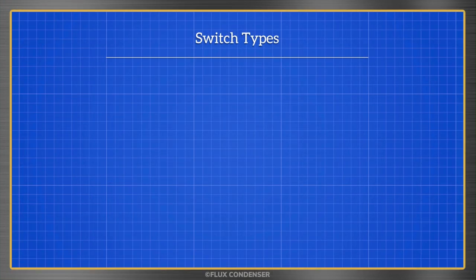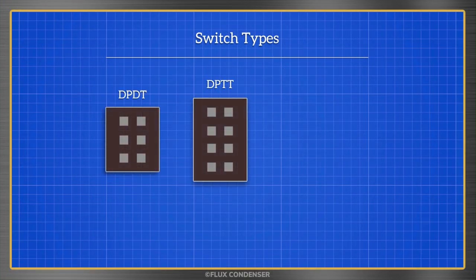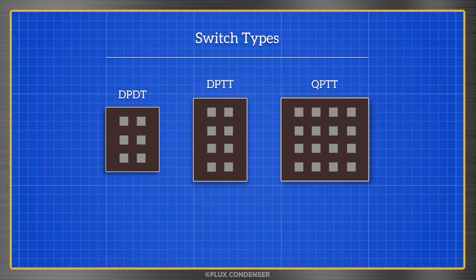There are three types of rocker switches in the kit: DPDT, DPTT, and QPTT. DPDT stands for dual pole, dual throw. DPTT stands for dual pole, triple throw. And QPTT stands for quad pole, triple throw.